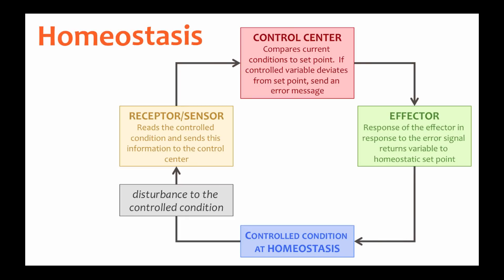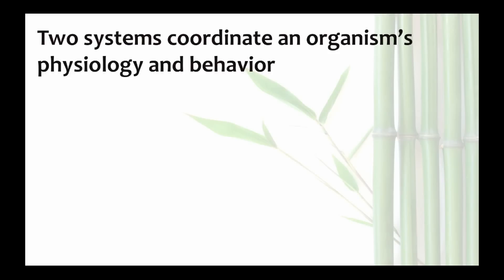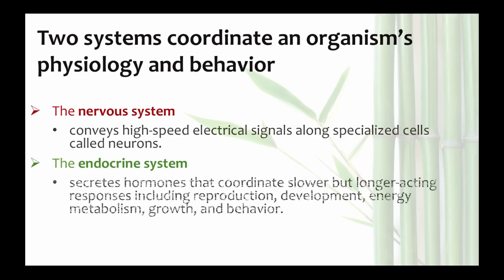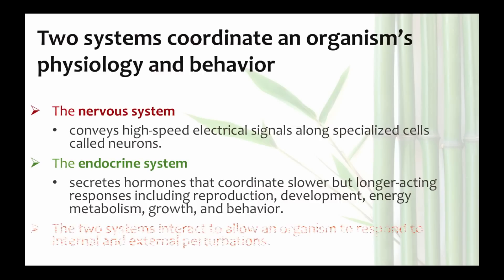For instance, if you get too cold you start to shiver to warm yourself up, or if you get too hot you start to sweat to cool yourself off. There are two major systems that coordinate to control an organism's physiology and behavior to maintain or return the body to these internal setpoints. The nervous system typically is involved in high speed responses, like pulling your hand away from a hot stove. The endocrine system typically is slower acting, but stimulates longer acting responses. I am going to introduce you to cells that provide a link between the nervous system and the endocrine system that allow organisms to respond to external conditions.